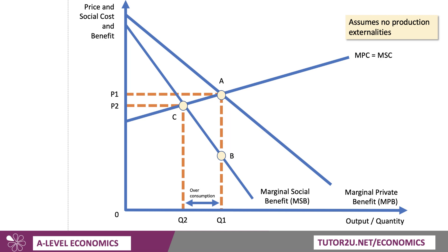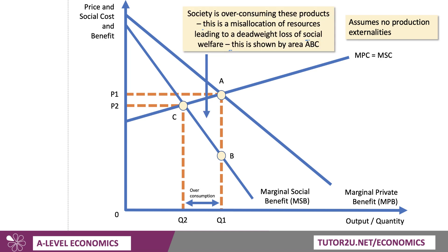Let's put some letters on here, because we want to show the deadweight welfare loss. Society with negative consumption goods is overconsuming these products. This leads to a misallocation of resources, causing a deadweight loss of social welfare shown by the area A, B, C. Because beyond output Q2, as you move from C to A and C to B, the marginal social cost is bigger than any marginal social benefit. So if we overconsume and end up at Q1, we cause a loss of social welfare.